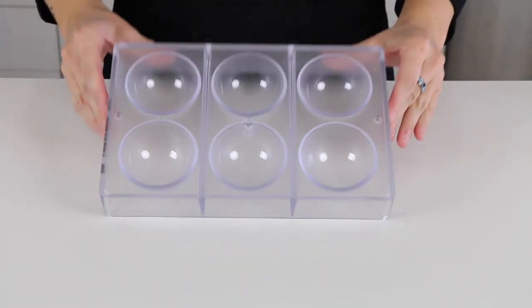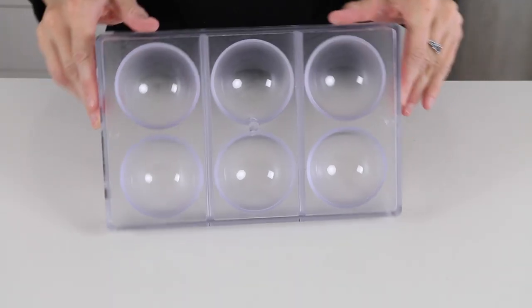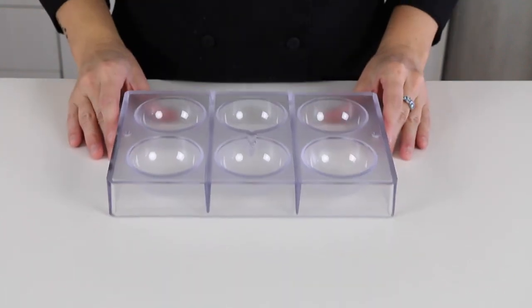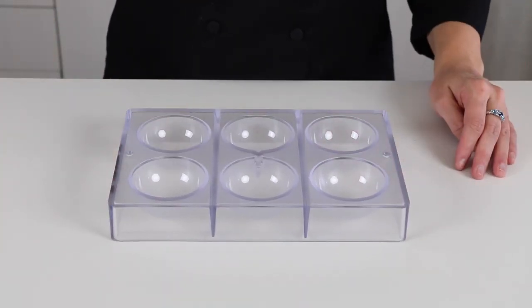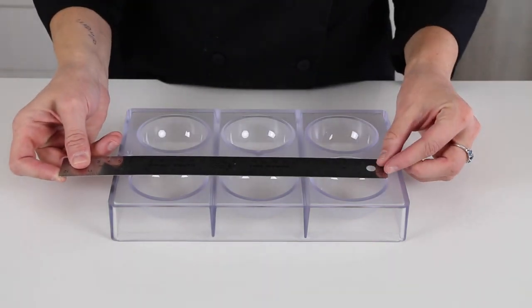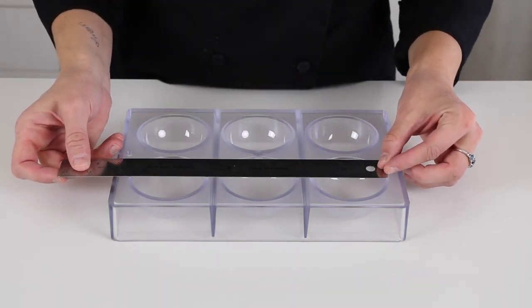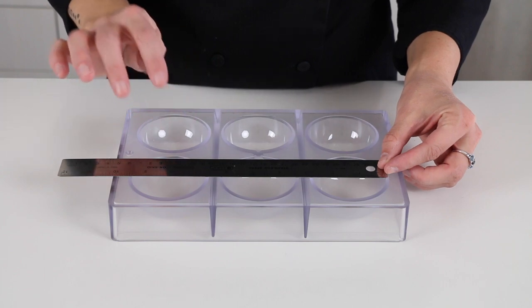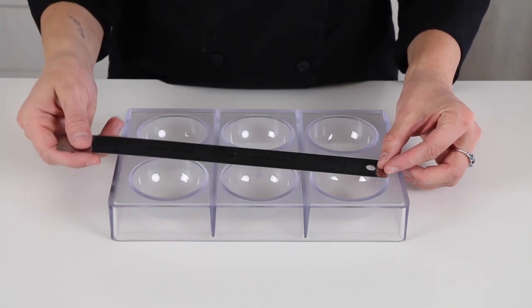A polycarbonate half sphere mold. I'm using chocolate world 2253. If you can't find this exact same one, you can find one similar. My openings are almost 2 and 3 fourths inches in diameter.